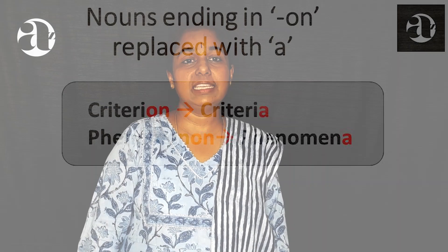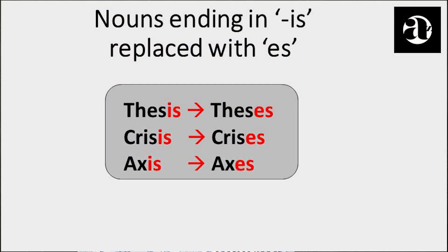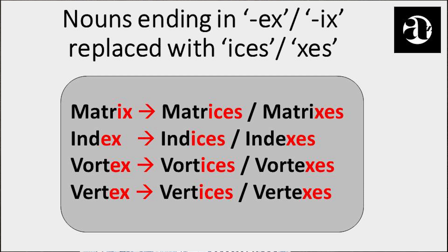Phenomenon in singular becomes phenomena in plural. For nouns ending in IS, the plural form is formed by replacing IS with ES. Thesis (T-H-E-S-I-S) becomes theses (T-H-E-S-E-S). Crisis becomes crises, axis becomes axes. For nouns ending in EX or IX, there are two forms of plurals: we replace EX or IX with ICES in formal usage, or use ES in certain contexts. Matrix becomes matrices or matrixes, index becomes indices or indexes, vortex becomes vortices or vortexes.